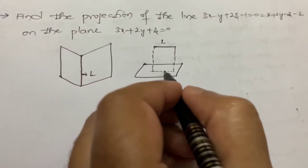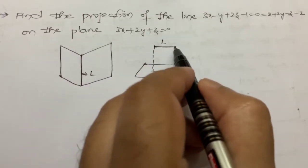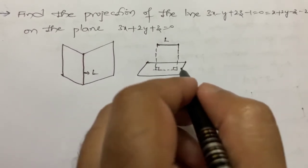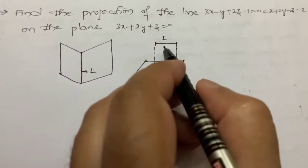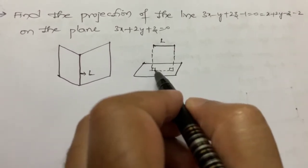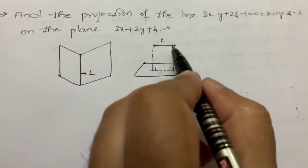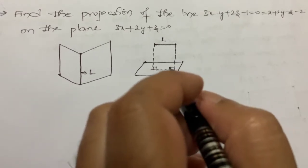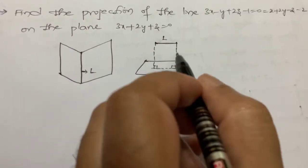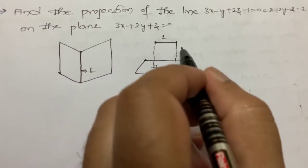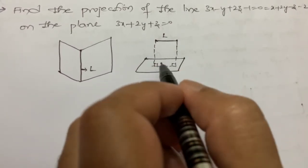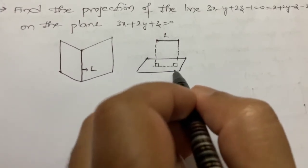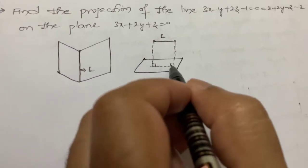If we want the projection of the line, it means there are two points on this line from which we are drawing perpendiculars onto the plane, and we have to calculate that line equation. But we won't find this line directly. What we will do is find the plane such that this plane and the given plane are intersecting along that projection line. This plane contains L and is perpendicular to the given plane.